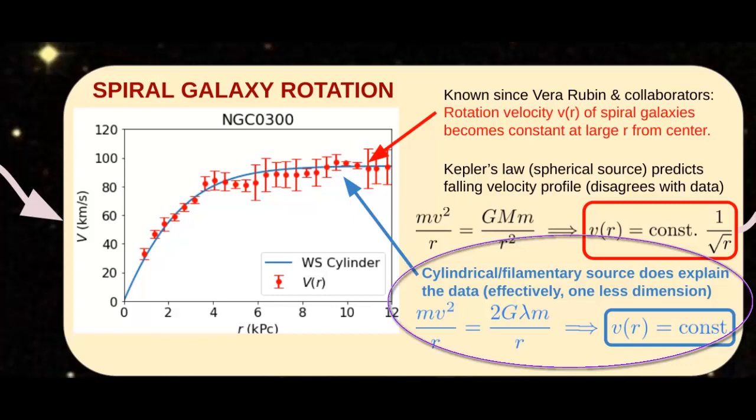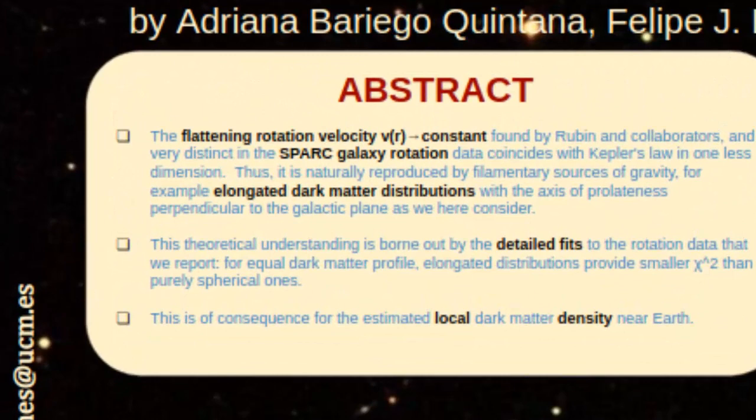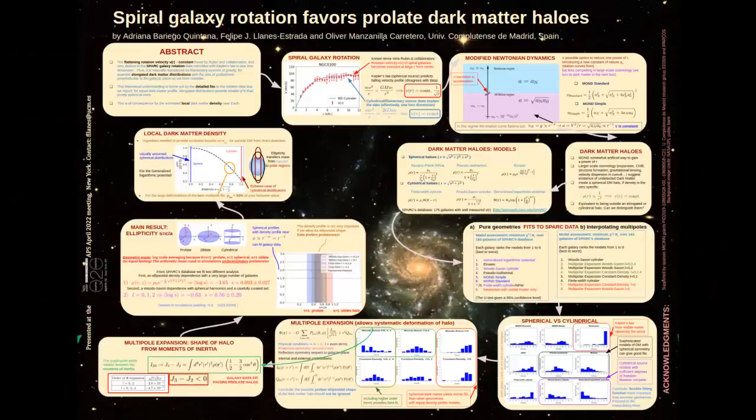This is because Gauss's law leads to an inverse r force instead of an inverse r to the minus two force. A way to achieve this in our actual three-dimensional world is with the help of a filamentary or cylindrical gravity source. We here report detailed fits of rotation curves showing an elongated source as a competitive hypothesis.